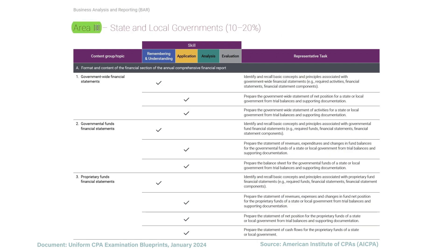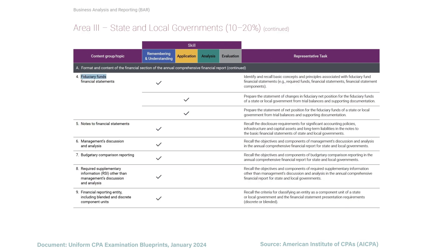Now we get to area three: State and Local Governments. First, we focus on the types of content in the Annual Comprehensive Financial Report. We need to know about government-wide financial statements, governmental fund financial statements, proprietary fund financial statements, and fiduciary fund financial statements — the basics of each fund type and how you account for them. We also need to know about footnotes, management's discussion and analysis, budget-to-actual comparisons, required supplementary information, and the financial reporting entity including blended and discrete component units.